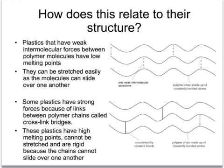In fact, if you try to stretch a rigid plastic it's likely to snap. That's because of these strong cross-links, which are made of strong covalent bonds — just as strong as those within the individual chains themselves.